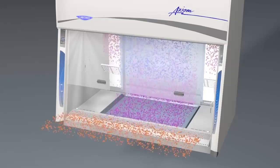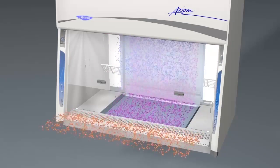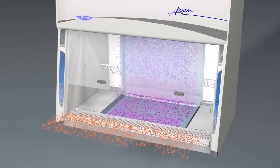Downflow air over the central chemzone work surface is drawn directly into the negative pressure dedicated exhaust airflow system.